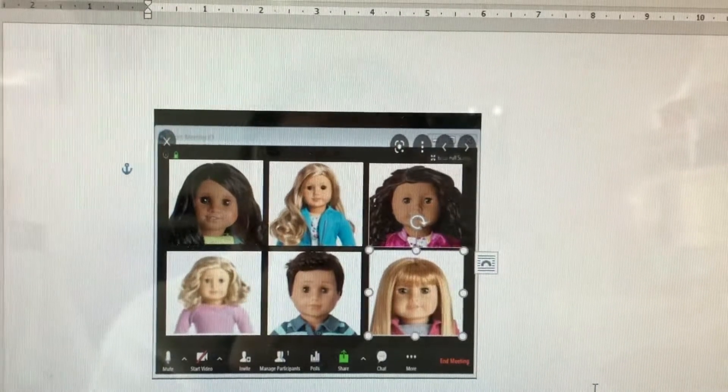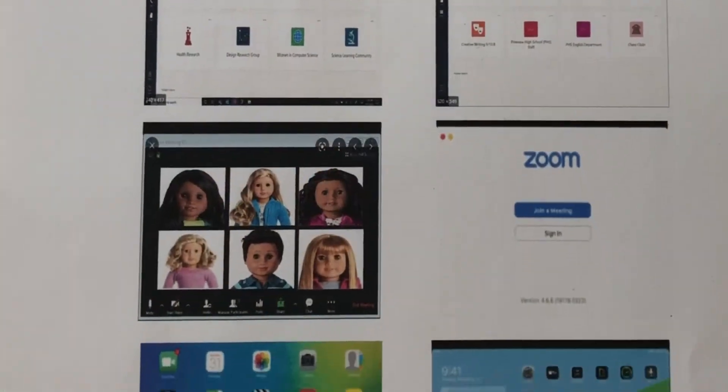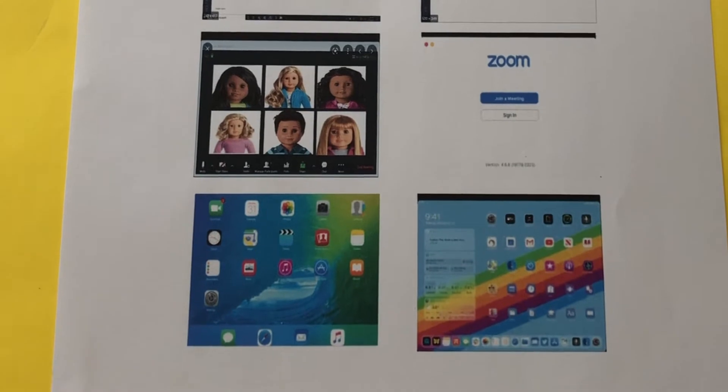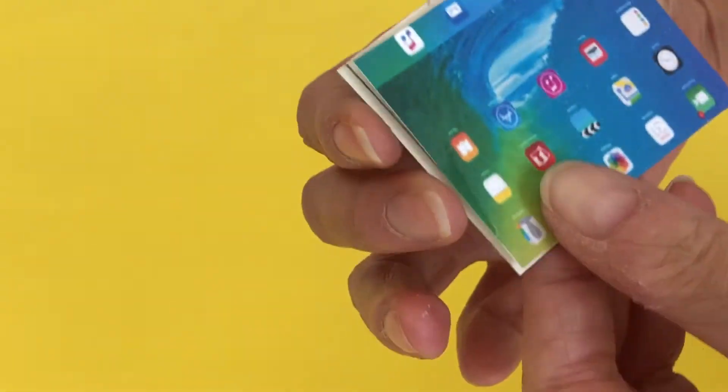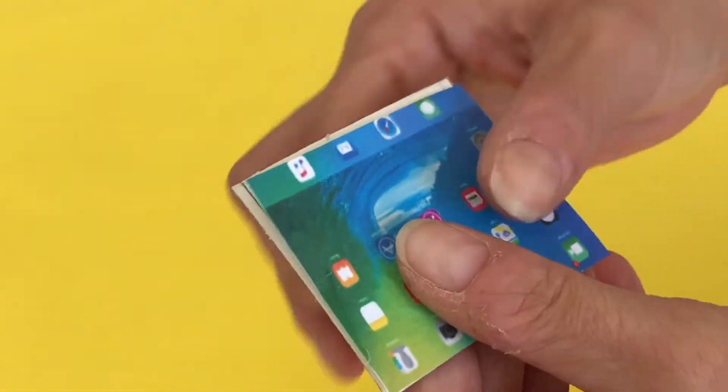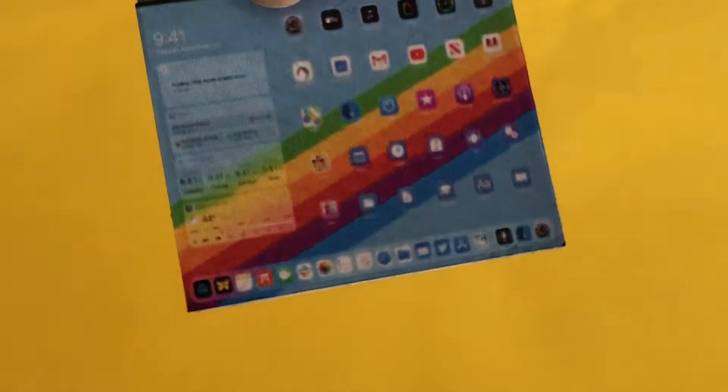We also have two Home screen images and a Teams apps screen page. Print, cut out, and paste to your paperboard inserts. To make them shiny and more durable, cover the inserts with packing tape. Slide into the slot we made in the iPad and your dolls are ready to learn.